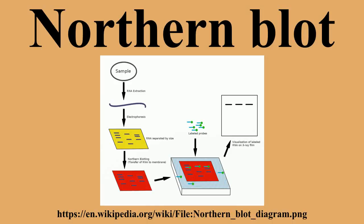The membrane is washed to ensure that the probe has bound specifically and to prevent background signals from arising. The hybrid signals are then detected by X-ray film and can be quantified by densitometry. To create controls for comparison in a northern blot, samples not displaying the gene product of interest can be used after determination by microarrays or RT-PCR gels. RNA samples are most commonly separated on agarose gels containing formaldehyde as a denaturing agent for the RNA to limit secondary structure.